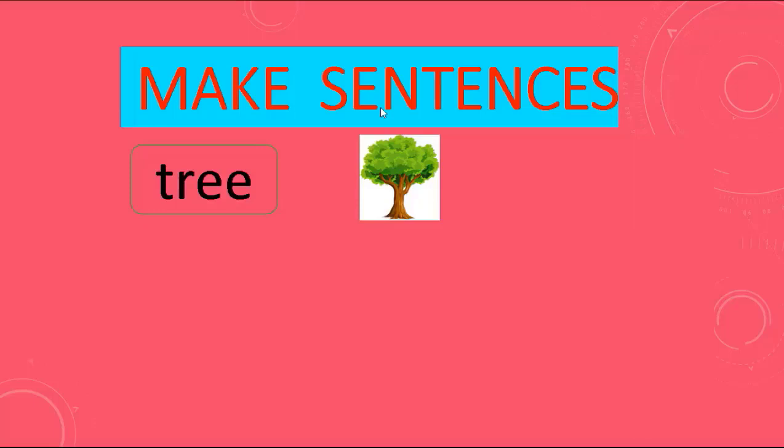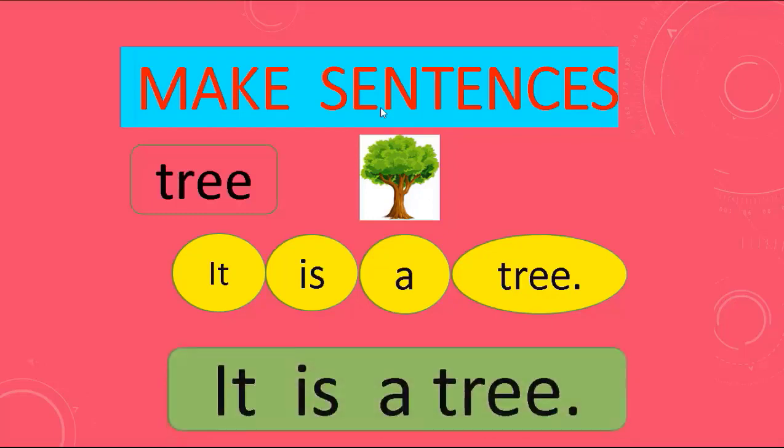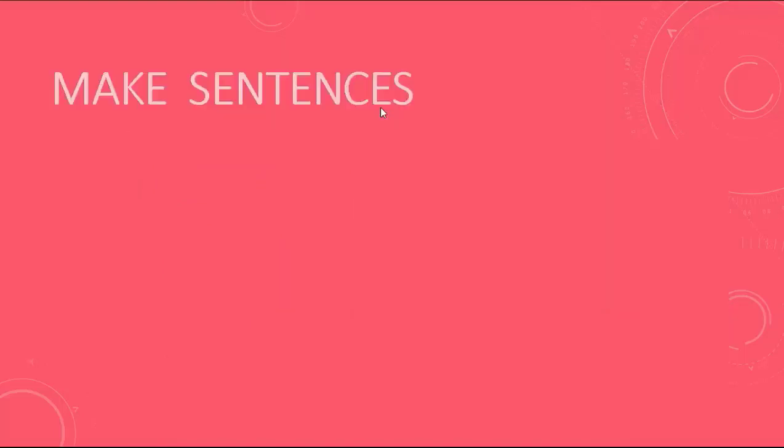Make a sentence with me. It is a tree. Our sentence is: It is a tree. Great job. And other word: arrow. Arrow, arrow.